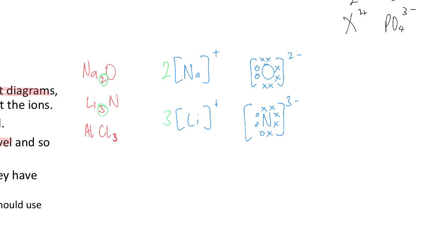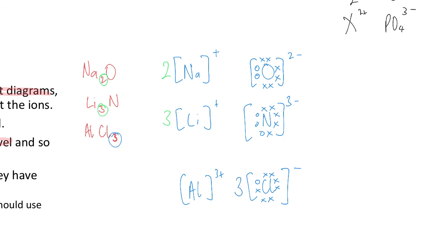And finally, AlCl₃. The Al has no electrons around it but is 3+. The Cl− has seven of its own electrons and one from the aluminium, and it's a 1−. There are three of them because of the subscript. So that's how you write ionic formulas, work out what they are, and draw ionic electron dot diagrams.